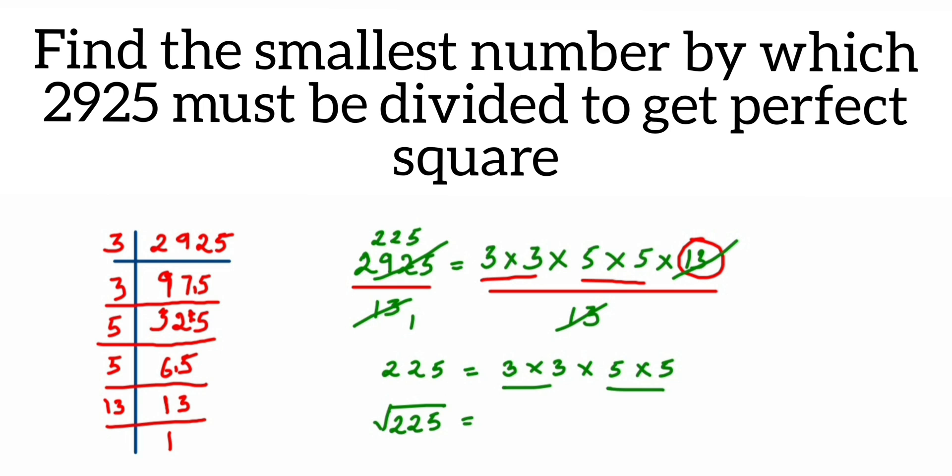So once you're done with prime factorization, just look for the number which is not paired, and that number is to be divided. So I've taken 3 and 5, we'll get 15. So the smallest number to be divided here is 13. I hope it's clear. In case you have any question or doubt, you can drop a comment below. Thank you.